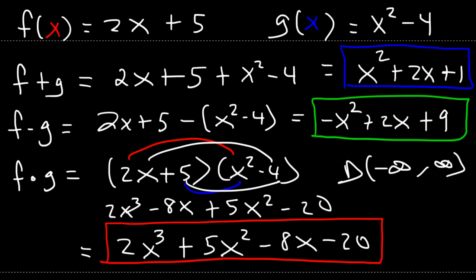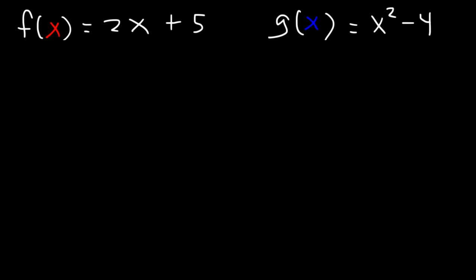Now what about f divided by g? What's the domain for this? f divided by g is simply 2x plus 5 divided by x squared minus 4. Now that we have a fraction, the domain is restricted. It's not all real numbers. To find the domain, you want to find the x values that do not exist, the values that x cannot be. To do that, set the denominator equal to 0.